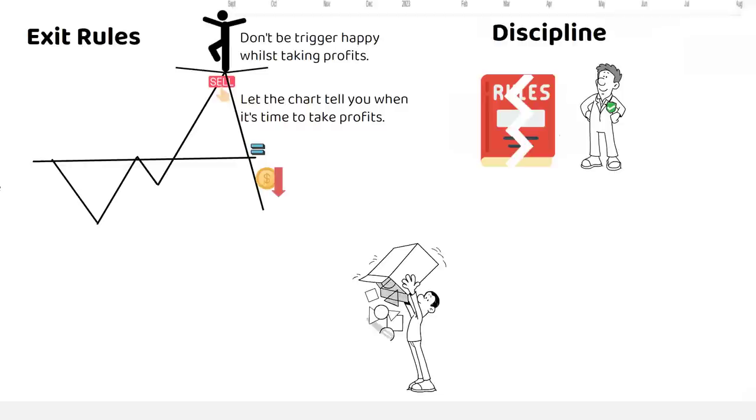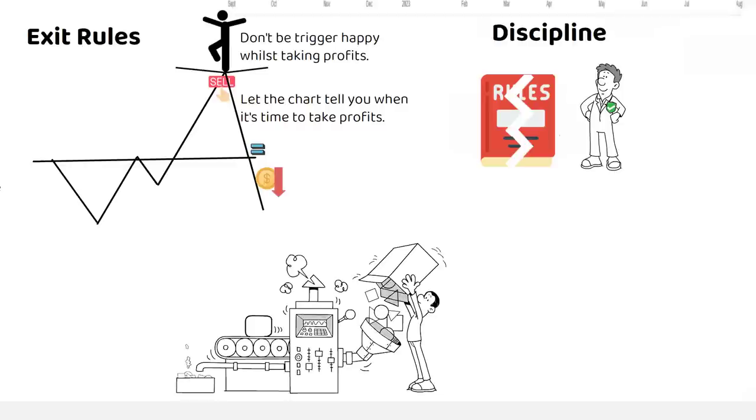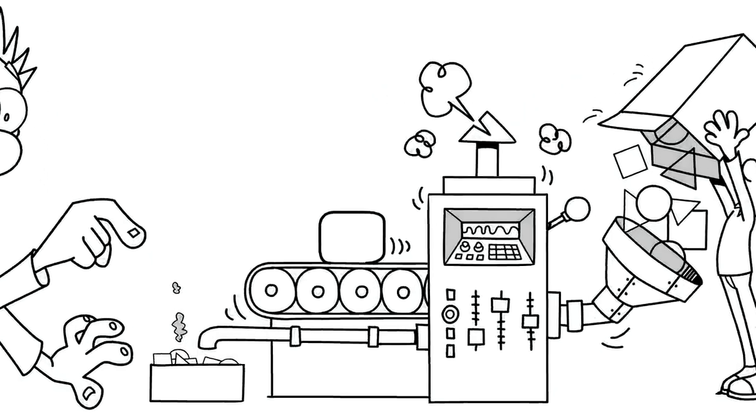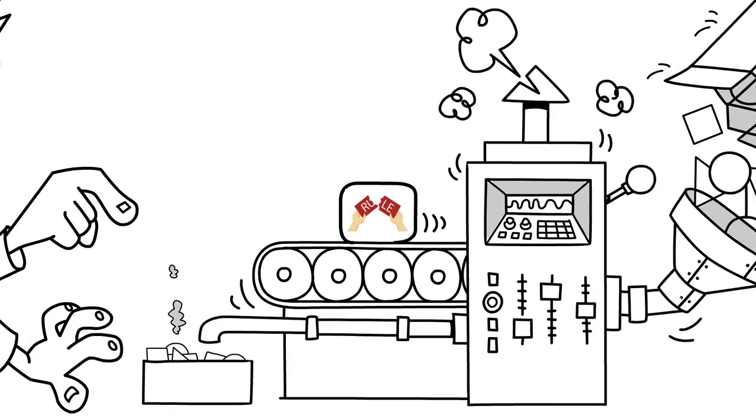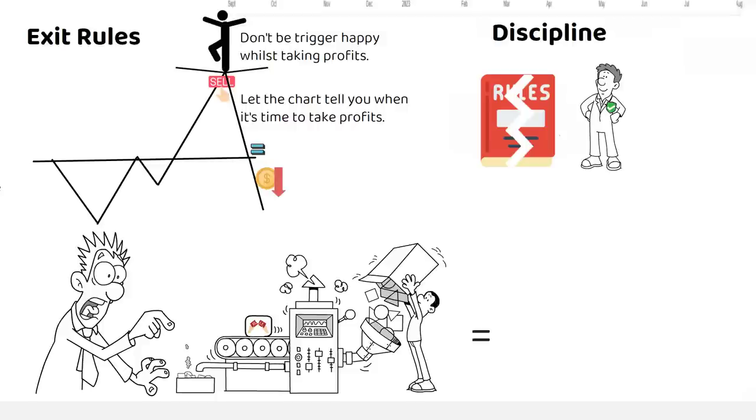To stay disciplined, it's always best to have a strategy that is as mechanical as possible. Being emotional at the wrong time, or frequently flouting your trading rules, will always be an impediment to your trading success.